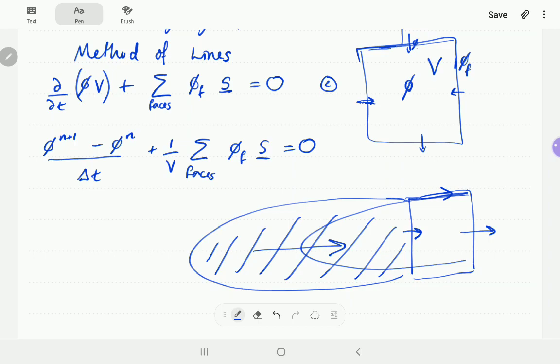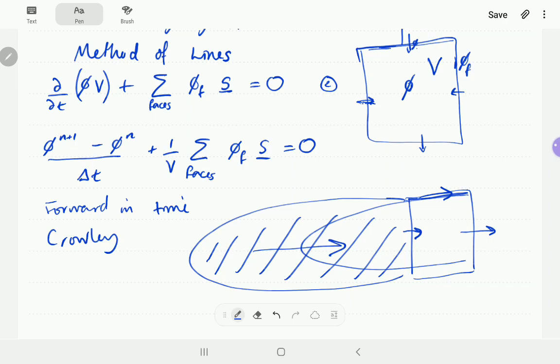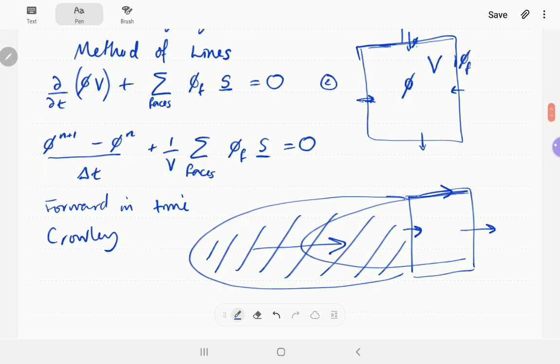And use these swept volumes or swept areas to calculate phi at the face. There are other names for this, as well as flux form semi-Lagrangian. This has been called forward in time or a Crowley scheme. There may be other names that have been used for it. And that is flux form semi-Lagrangian.